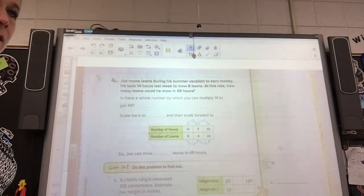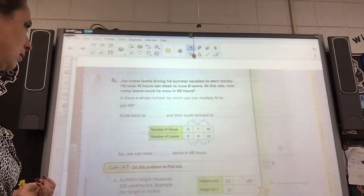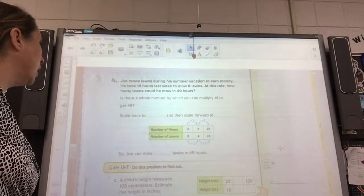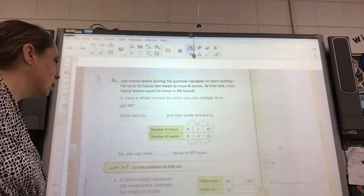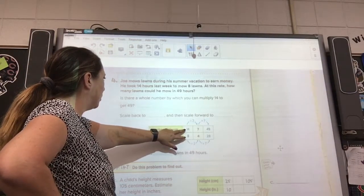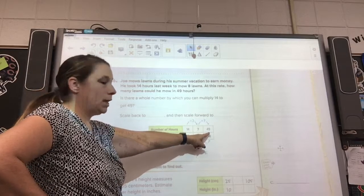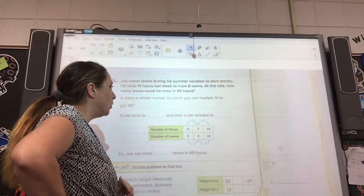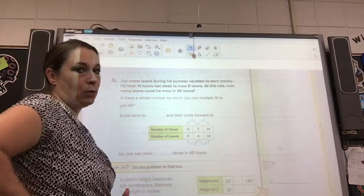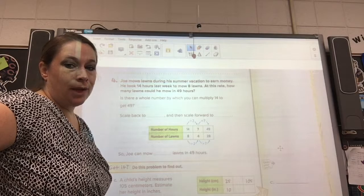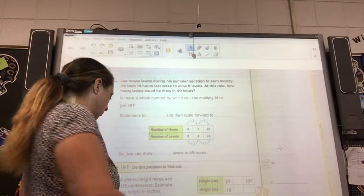Sorry, I keep switching from yards to lawns, but I call them yards and the book calls them lawns, and I get confused. All right. So first, they give us 14 hours, 8 lawns. And they want to know 49. So they show us again, is there a number by which you can multiply 14 to get 49? And if you look at your multiplication chart, you're going to find that the answer is no.